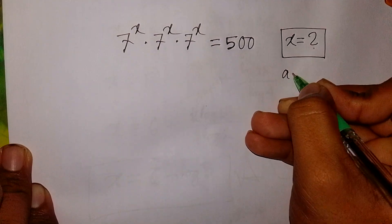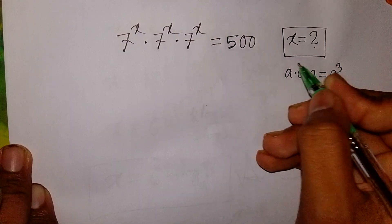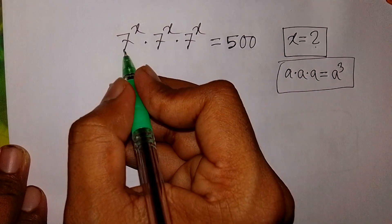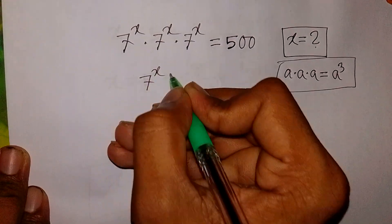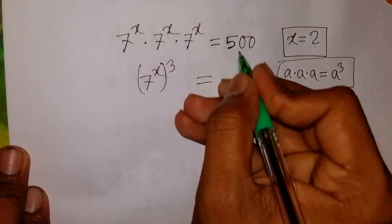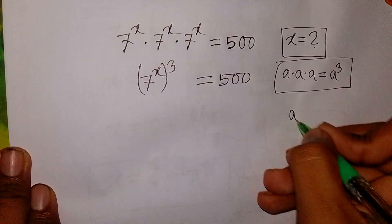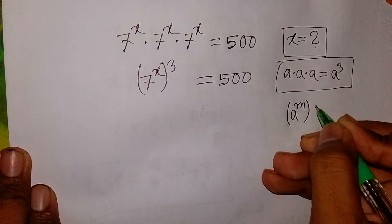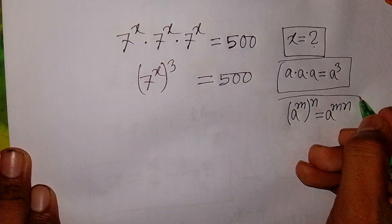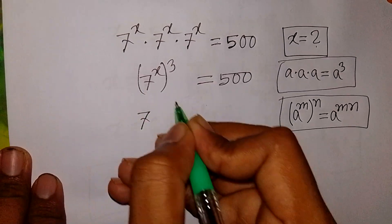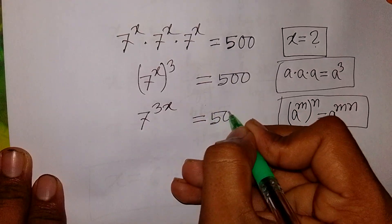In the form a times a times a is equal to a cube. So this times this times this is the same as 7 power x, whole cube, is equal to 500. We apply the exponential rule that a power m, bracket power n, is equal to a power m·n. So it will be 7 power 3x is equal to 500.